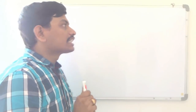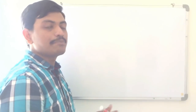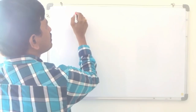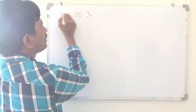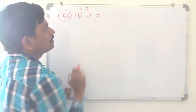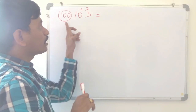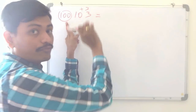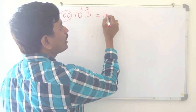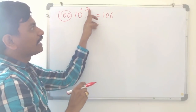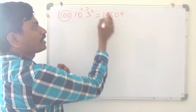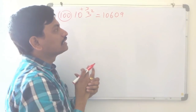Now let us see squares of numbers nearer to 100. A similar method applies. I will take a number from 100 to 110 — let's take 103, which is nearer to 100. 103 is how much bigger than 100? Plus 3. For numbers nearer to 100, we add or subtract to the number itself. So 103 plus 3 is 106. And 3 squared is 09. So 103 squared is 10,609.